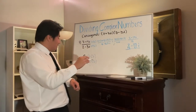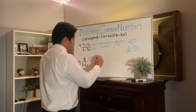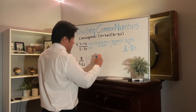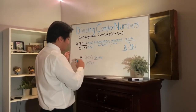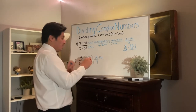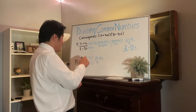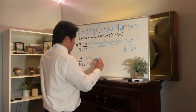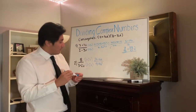We're going to distribute like before: 8 times 3 is 24, and 8 times negative 2i is negative 16i. Over the denominator: 3 times 3 is 9, and 2i times negative 2i is negative 4i squared. Again, i squared equals negative one.